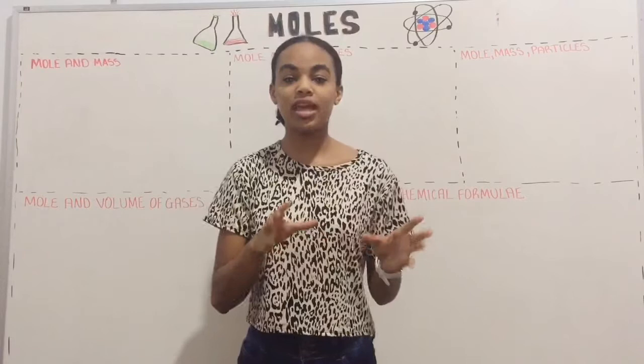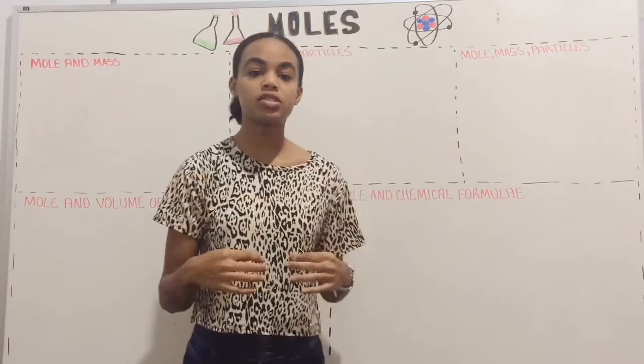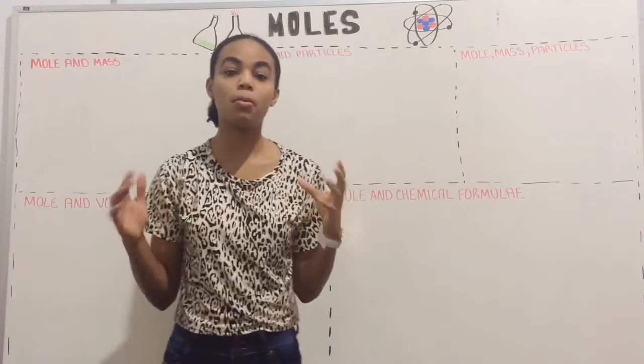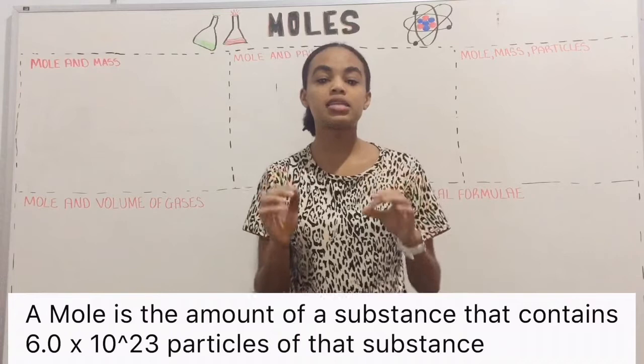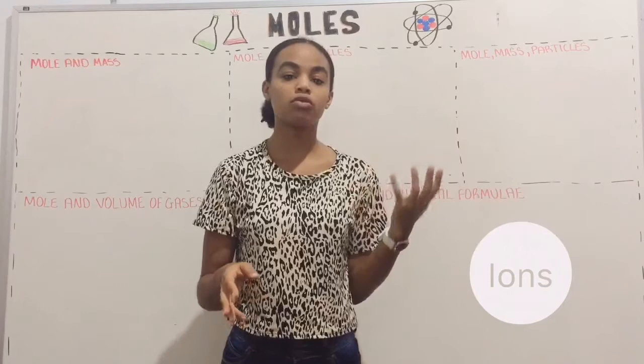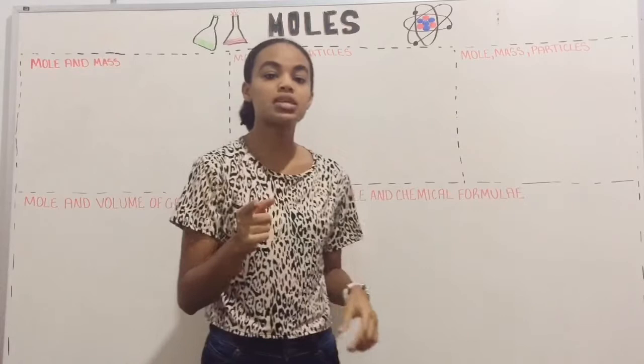Welcome back to Caribbean Toots. Today we are looking at moles and moles concepts. A lot of you guys sent questions for me to cover in this video, and I'll also be using questions from your textbook. A mole is the amount of a substance that contains 6.0 times 10 to the 23rd particles. When we say particles, we can refer to atoms, molecules, or ions. When we say amount, we can refer to mass, or if it's a gas, it would be volume.